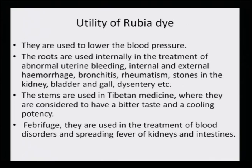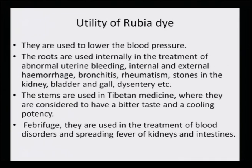Other utilities of rubia dye: it is used to lower blood pressure. The roots are used internally in the treatment of abnormal uterine bleeding, internal and external hemorrhage, bronchitis, rheumatism, stones in the kidney, bladder and gall, as well as dysentery. Stems are used in Tibetan medicine, where they are considered to have a bitter taste and cooling potency. As a febrifuge, they are used in the treatment of blood disorders and spreading fever of the kidneys and intestines. These dyes are not only non-toxic but have very pronounced medicinal effects.